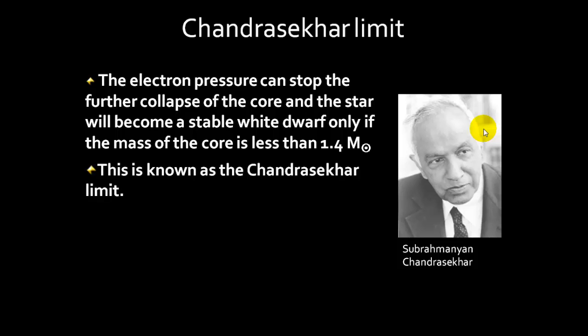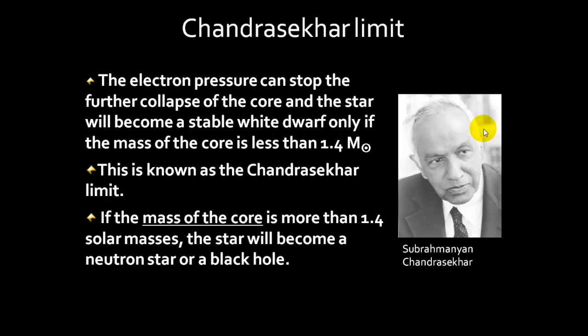If the mass of the core is greater than 1.4 solar masses, the star will become a neutron star or black hole. The reason is that the electron degeneracy rule — also known as the Pauli Exclusion Principle — will not be respected. The atoms will be crushed into each other, producing solid neutrons that fuse together. This is a much more dramatic ending. In an extreme case, the result is a black hole.